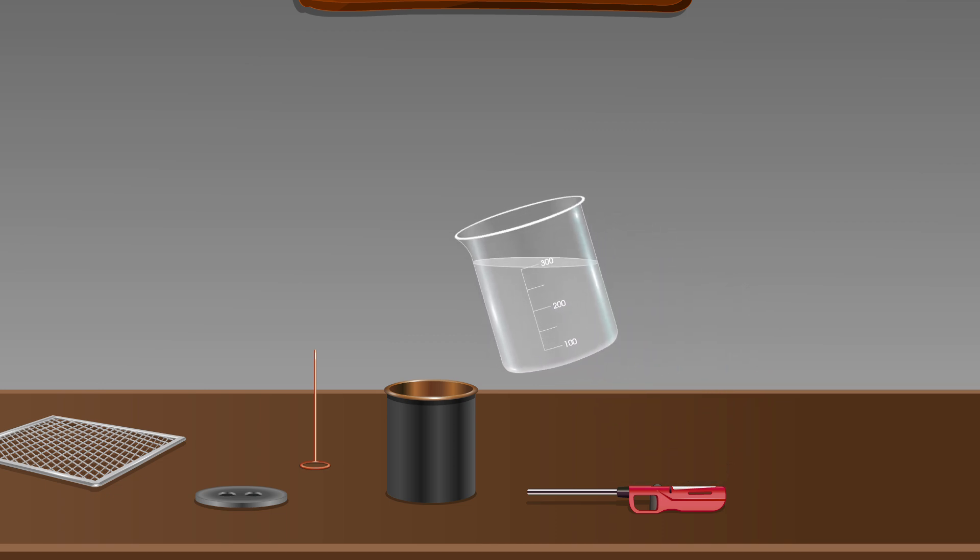Take about 300 ml water in calorimeter with stirrer. Cover calorimeter with two hole lid.